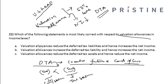Looking at the options: the valuation allowance reduces the deferred tax liability and hence increases net income — this option is incorrect. The valuation allowance increases the deferred tax liability and hence reduces net income — this is also incorrect. The valuation allowance reduces the deferred tax assets and hence reduces net income — this option is correct, because for deferred tax assets the company is sure it will not recover in the near future, the valuation allowance is used and hence reduces net income.